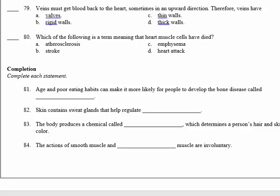Number 82: skin contains sweat glands that help regulate body temperature. The body produces a chemical called melanin that determines a person's hair and skin color.